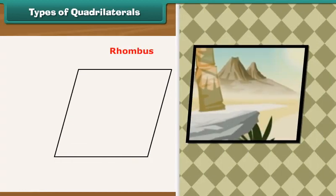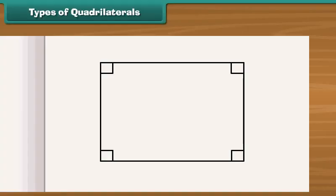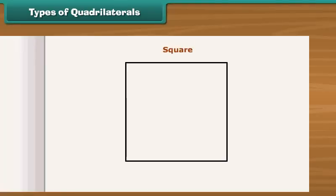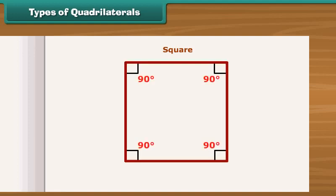A parallelogram in which all angles are right angles, that is 90 degrees, is called a rectangle. For example, this gift bag is a rectangle. A square is a parallelogram in which all angles are right angles and all sides have same length.